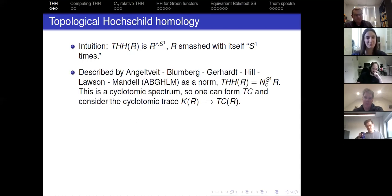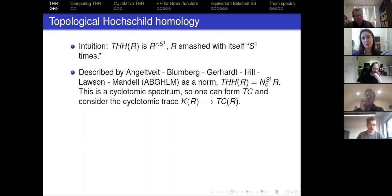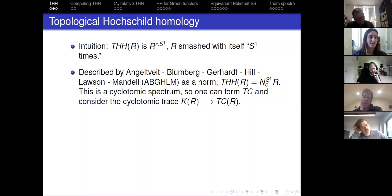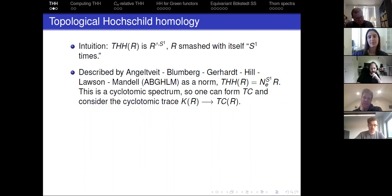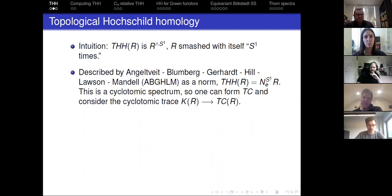Angeltveit, Blumberg, Gerhardt, Hill, Lawson, and Mandel — from now on I'll refer to as ABGHLM — defined it as a norm. You can think of it as norming up the ring spectrum R from the trivial group to S1. They also showed that if you think about it that way, it's a cyclotomic spectrum. With this cyclic bar construction model, you can do TC and talk about this as a norm of trace. This leads naturally to thinking about CN relative THH if you're starting with a CN ring spectrum.